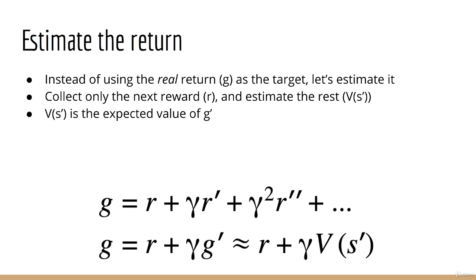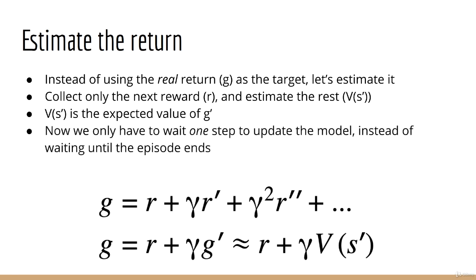In this way, we only have to wait one step before updating our model. We no longer have to wait until the end of the episode. We call r plus gamma times V(s') a bootstrapped estimate of the return. It allows us to update V(s) immediately after obtaining the next reward r, instead of having to wait until we've collected all the future rewards. This method is called the temporal difference method.